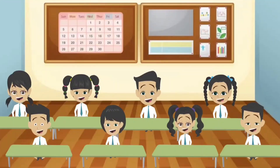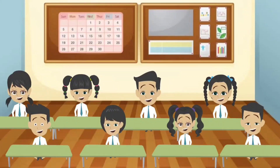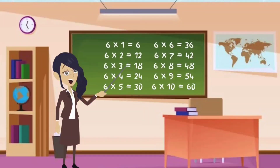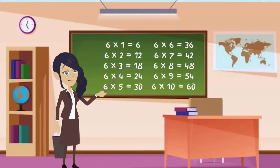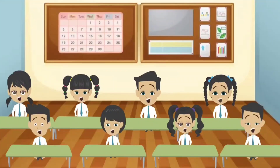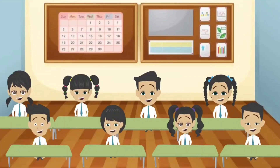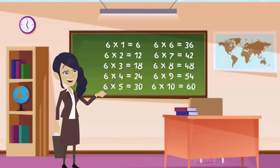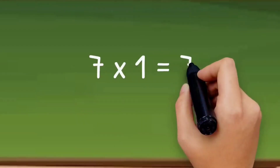Let's do this again together. 6 ones are 6. 6 twos are 12. 6 threes are 18. 6 fours are 24. 6 fives are 30. 6 sixes are 36. 6 sevens are 42. 6 eights are 48. 6 nines are 54. 6 tens are 60.